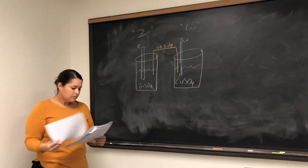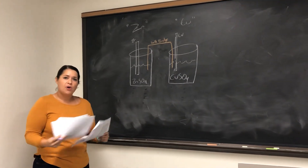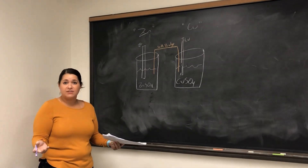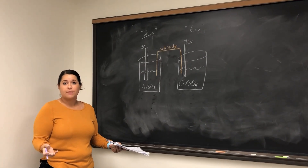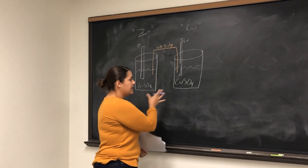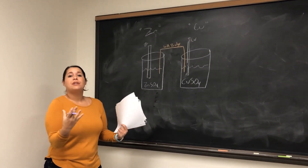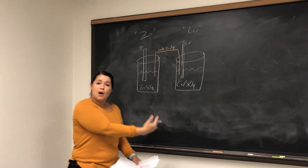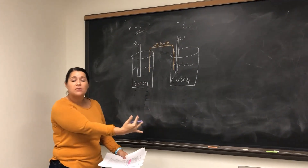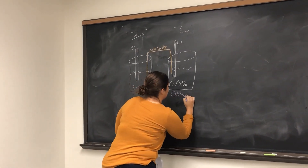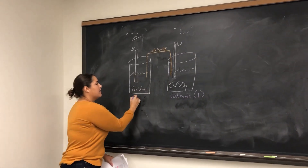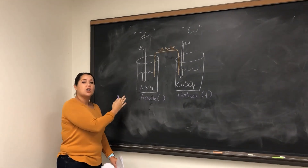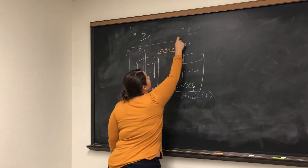Looking at your table on page 184, it's important to know the reduction potentials for zinc and for copper. Zinc's reduction potential is around negative 0.76 and copper's is around 0.34. Which one is going to be more negative — which one is going to be harder to reduce? That is going to be your anode. Because zinc is negative 0.76 and copper is plus 0.34, copper is going to be your cathode — positively charged — and your anode is going to be your zinc, negatively charged. The flow of electrons always goes from your anode to your cathode.